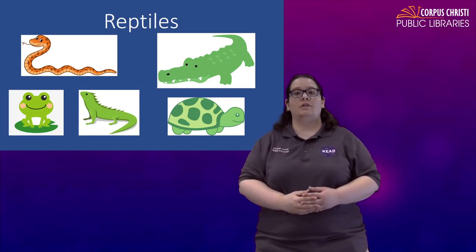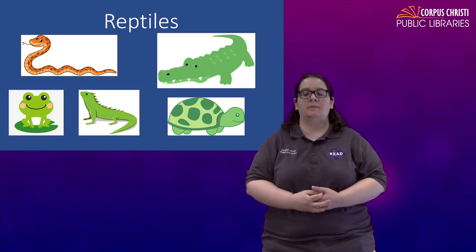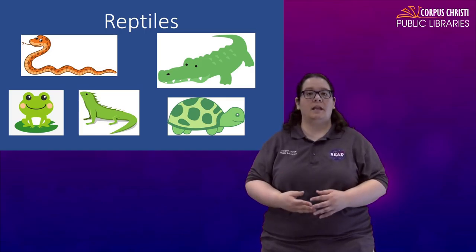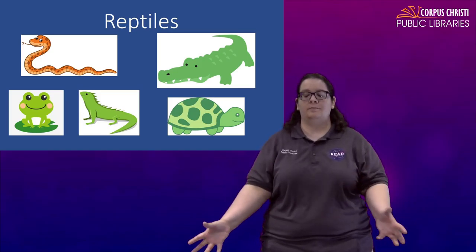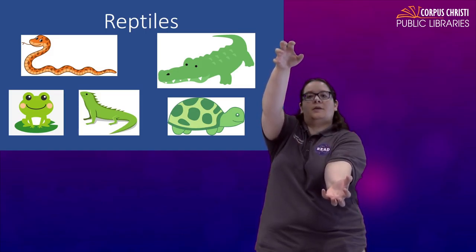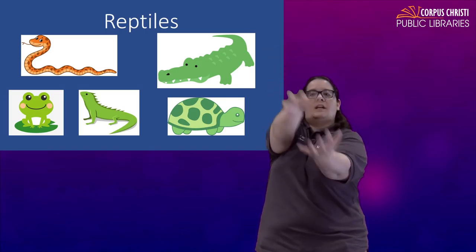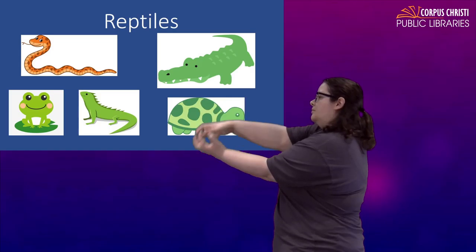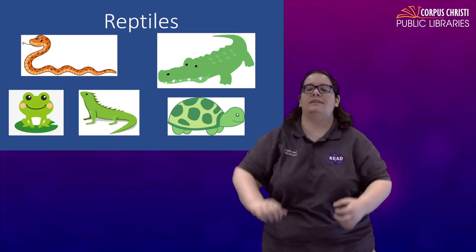For an alligator or a crocodile they have the same sign so this is one of those animals that you're going to want to spell out to tell them if you are specifically talking about an alligator or a crocodile. For that we're going to claw our hands and we're going to open them wide like the mouth of crocodile or an alligator and we're going to snap them shut. Crocodile or alligator. Let's get those big jaws in there.